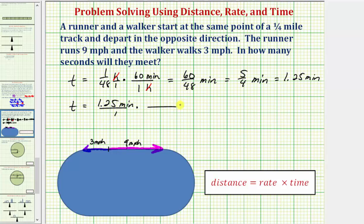To convert minutes to seconds, because we don't want minutes in our answer, we'll write minutes in the denominator and seconds in the numerator. And the conversion is sixty seconds equals one minute. Notice how the units of minutes simplifies out. And therefore this product will give us the time in seconds.